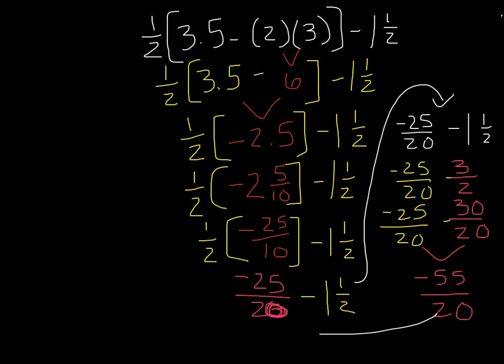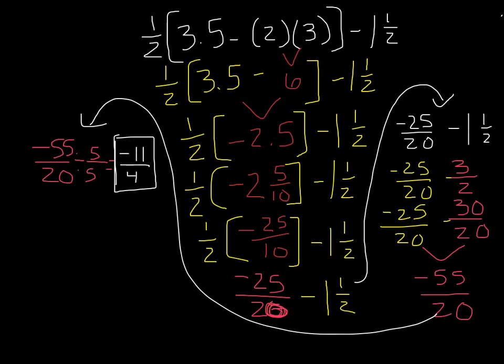I now take this number, and hopefully your notes are a little bit cleaner than mine. But for negative 55/20, I can divide both my numerator and my denominator by 5 to give me my final answer of negative 11/4. And that is my final answer for our example number 1.